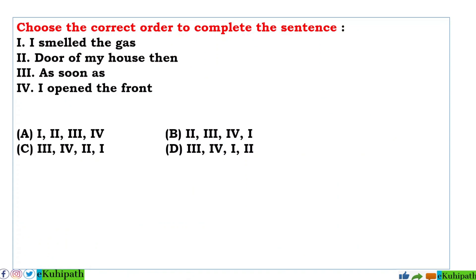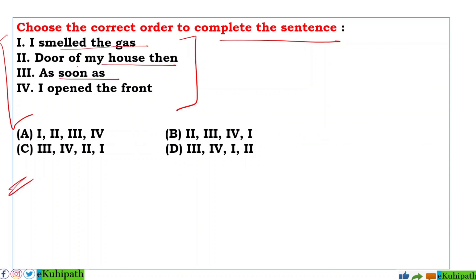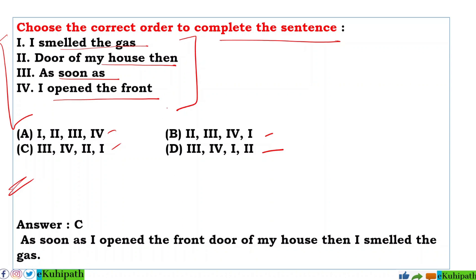Next: Choose the correct order to complete the sentence. The segments are: one — I smell the gas, two — as soon as, three — the door of my house, four — I open the front. The correct sentence is: 'As soon as I opened the front door of my house, I smelled the gas.' That is the correct sentence order.